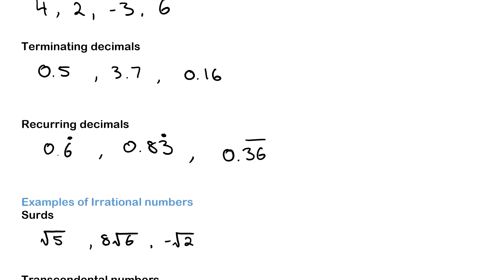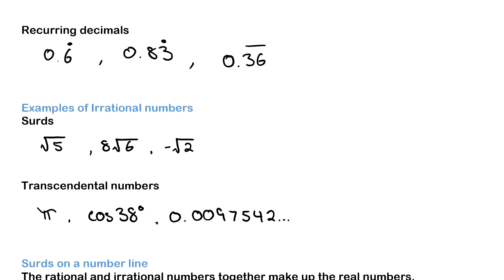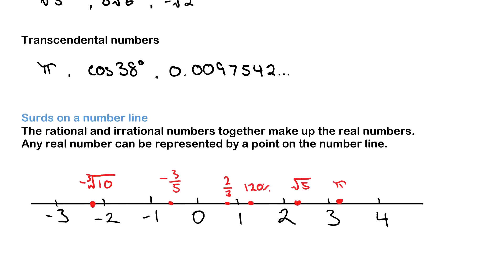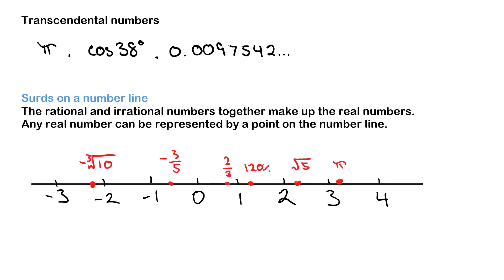These are all rational numbers. Irrational numbers on screen include surds such as root five, root eight, root six, negative root two, and transcendental numbers such as pi, cos 38, and 0.0097542... because it keeps going on. Surds can be represented on a number line because rational and irrational numbers are both real numbers, and any real number can be represented by putting a point on a number line. On screen we have surds, fractions, percentages, and pi — all real numbers — alongside integers, and they can all be represented on the same number line.